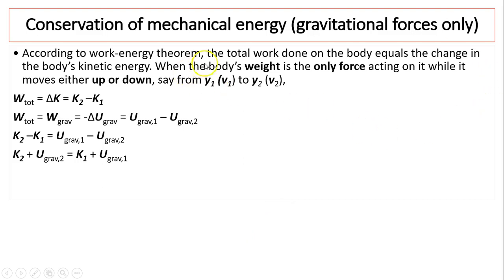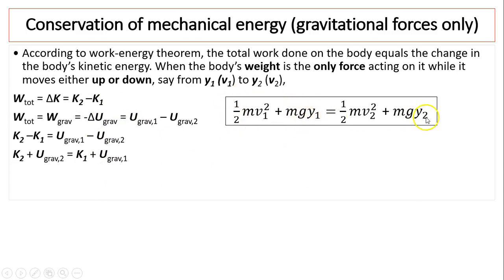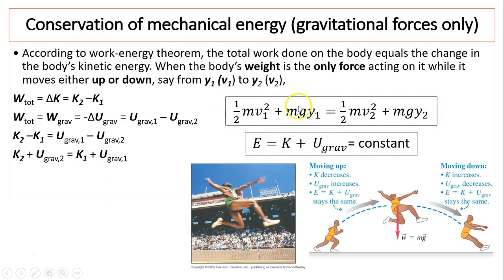Conservation of mechanical energy: according to the work-energy theorem, total work done equals the change in kinetic energy. Because only gravity is doing work, the total work is work done by gravity, which equals the negative change in gravitational potential energy. Setting these equal, we get that total mechanical energy is constant — potential plus kinetic equals total mechanical energy. As a long jumper goes into the air, total mechanical energy is constant; as you move up, K decreases and U increases, with E the same.